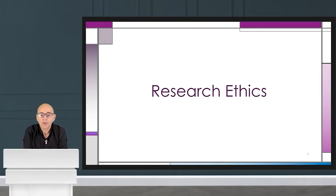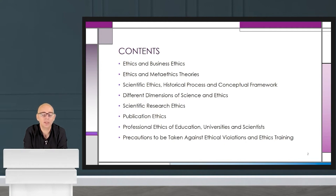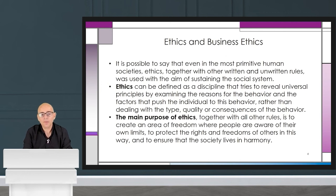This is a research ethics class. The general title of today's class is Research Ethics. The contents of this class start with ethics and business ethics, ethics and myth, ethics theories, scientific ethics, historical process and conceptual framework, different dimensions of science and ethics, scientific research ethics, publication ethics, professional ethics of education, universities and scientists, precautions to be taken against ethical violations, and ethics training. It is quite comprehensive and detailed. Let's start with the first chapter: ethics and business ethics.